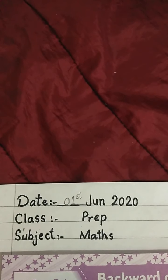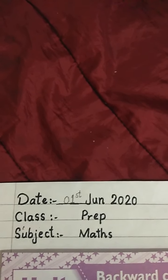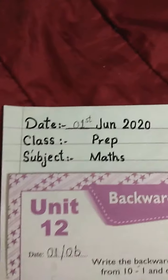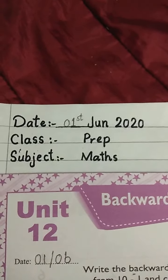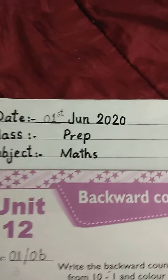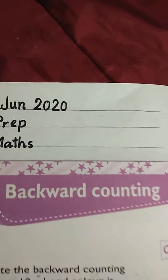As you have learnt last week, subtraction and addition sums with horizontal and vertical methods, this week we are going to start some new work. We have started unit 12, and the topic is backward counting.